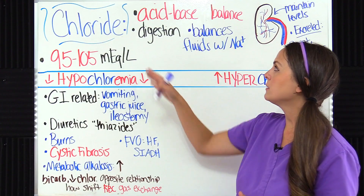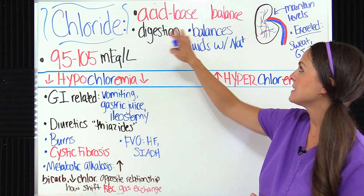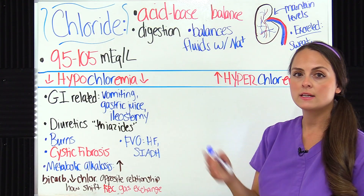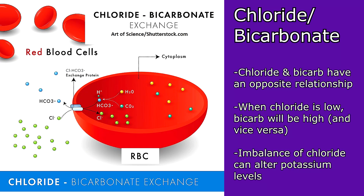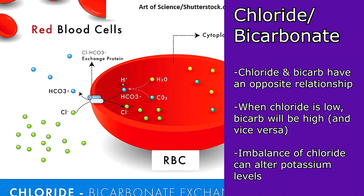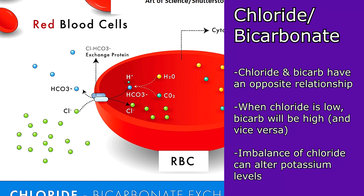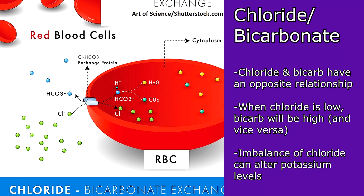Chloride is very important for helping maintain our acid-base balance because of its relationship with bicarb. They actually have an opposite relationship — when the chloride level is low the bicarb level will be high and vice versa. Plus whenever you have an imbalance of chloride occurring due to metabolic acidosis or alkalosis, the potassium level will be altered as well.